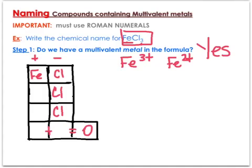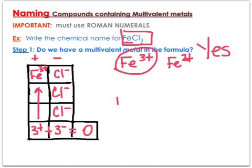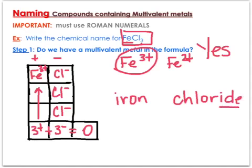Non-metals never have multiple ion charges — they only have one. Chlorine always has a charge of negative one, so adding that column of negatives gives a total of negative three. My positive column must therefore equal positive three. There's only one iron, so that one iron needed a charge of plus three to balance out. Writing the name: start with iron, leave a space for the Roman numeral, change the non-metal ending to -IDE as usual for ionic compounds, then write the Roman numeral. So it's iron three chloride.